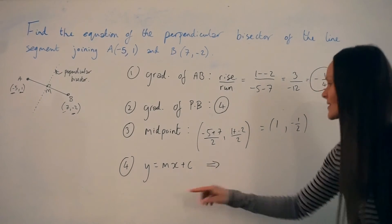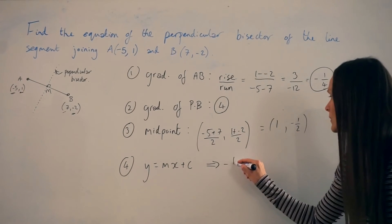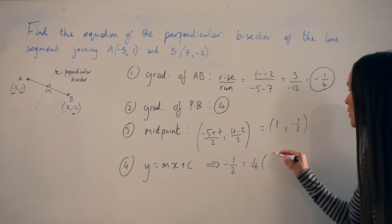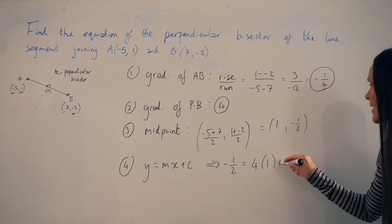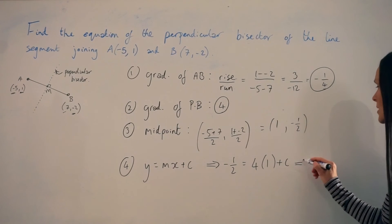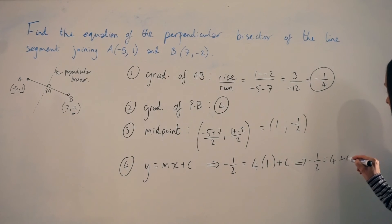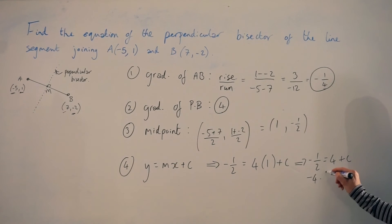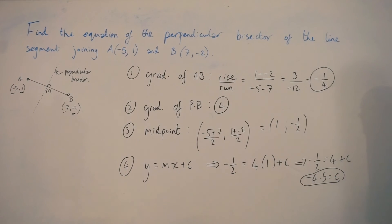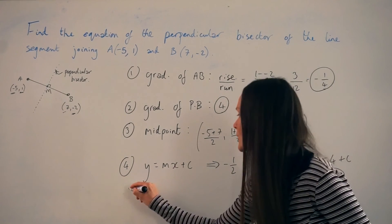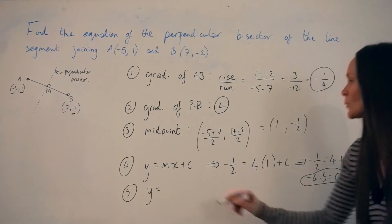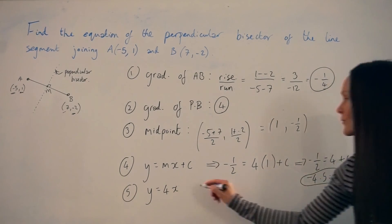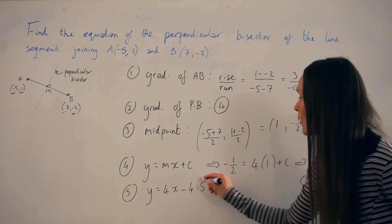I'm substituting in the y-value of the midpoint, which is negative 1/2, then the gradient m which is 4, multiplied by the x-coordinate of the midpoint which is 1, then adding c. So 4 multiplied by 1 is just 4, giving us: negative 1/2 = 4 + c. To solve for c, I subtract 4 from both sides, so c is negative 4 and a half. Now we put it all together. The equation is y = 4x + c, where the gradient is 4 and the y-intercept c is negative 4.5. So the equation of the perpendicular bisector is y = 4x − 4.5.